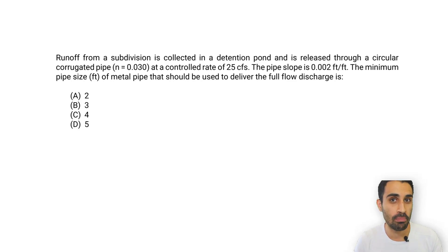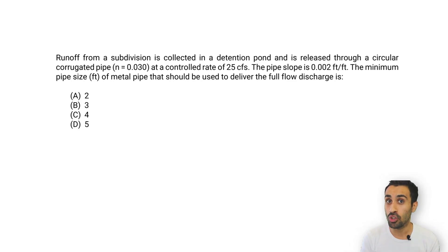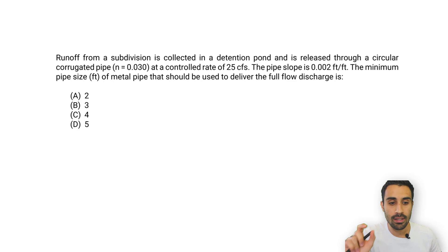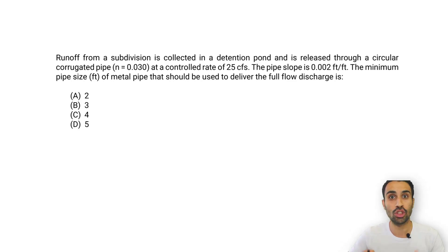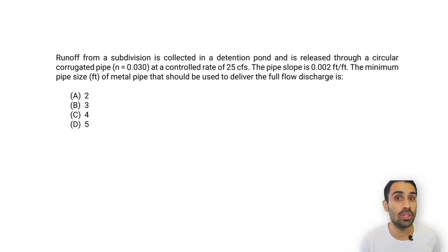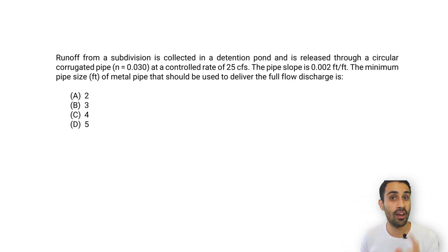Here's a must-know civil FE type problem. I bet you're capable of doing this. So pause the video and try your best to arrive at an answer for this question. What you're doing is finding the minimum pipe size to deliver this discharge assuming full flow. Pause the video, do this on your own, then check your solution with mine.